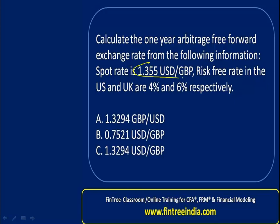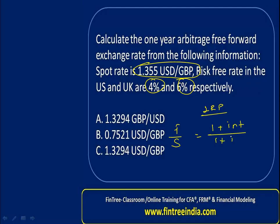We have the current spot rate and we have the interest rate. We've been asked to calculate the one year forward rate. This question can be approached using a basic interest rate parity equation: forward divided by spot is equal to one plus interest rate divided by one plus interest rate. The currency quoted in the numerator determines which interest rate goes in the numerator — in our example, US interest rate in the numerator and UK interest rate in the denominator.